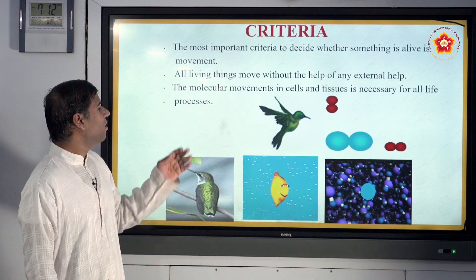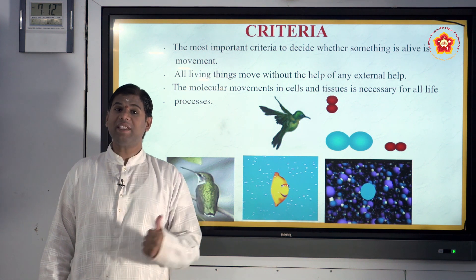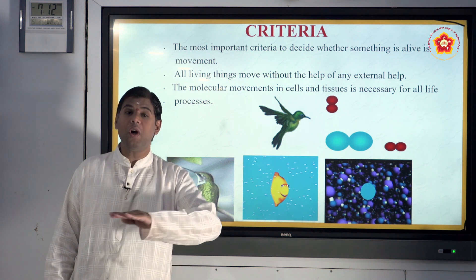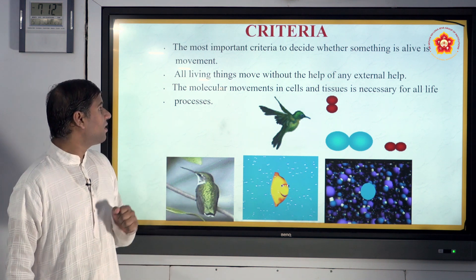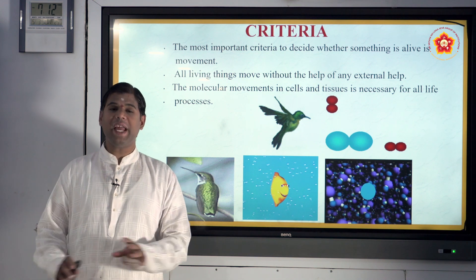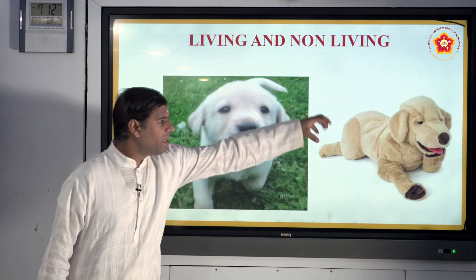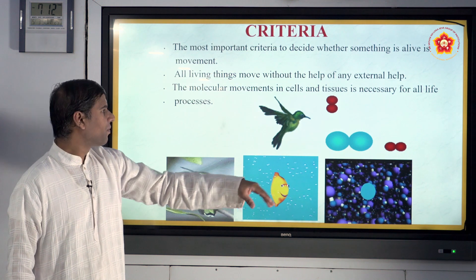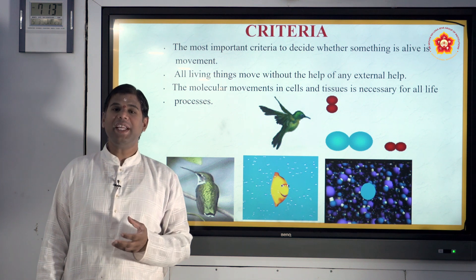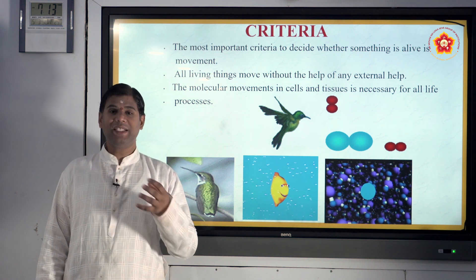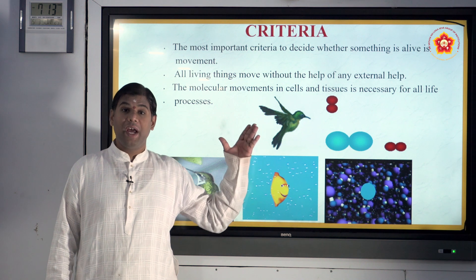The criteria to decide whether something is alive or not: the first is movement. All living things move without any external help. The molecular movement in cells and tissues is also an important criteria for living things — all molecular processes take place in a living body, and the moment you're dead, all those processes get arrested.